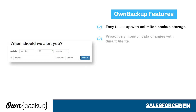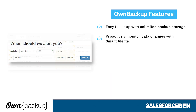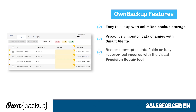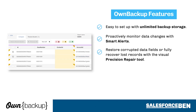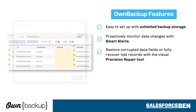Proactively monitor data changes with smart alerts. These are important when working with large data volumes where it can be hard to spot anomalies, especially malicious activity. Restore corrupted data fields or fully recover lost records with the Visual Precision Repair tool — the safety net you were looking for to easily identify unwanted loss and corruption.